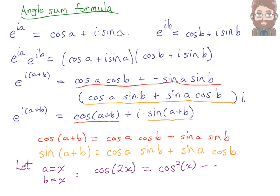And sine of 2x - well, you're going to have cosine x sine x plus sine x cosine x. Both those terms are actually the same, so you get 2 sine x cosine x.